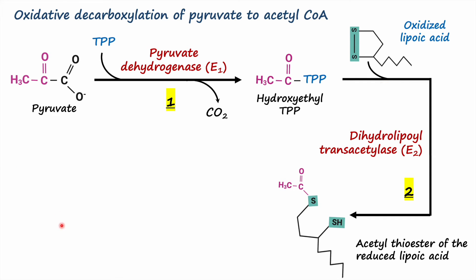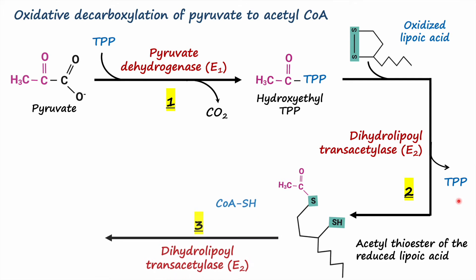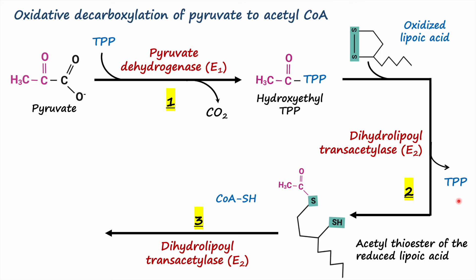Once hydroxyethyl thiamine pyrophosphate is transferred onto lipoic acid, it reduces the disulfide bond of lipoic acid, resulting in the formation of the acetyl thioester of lipoic acid. In the process, thiamine pyrophosphate is released and can then be utilized for the next set of oxidation reactions.